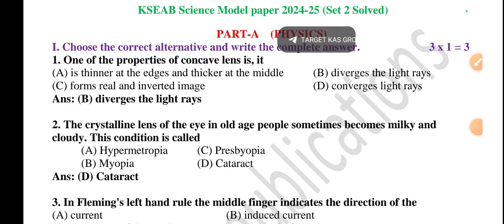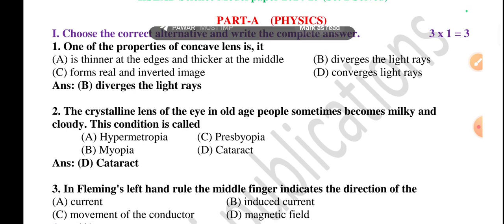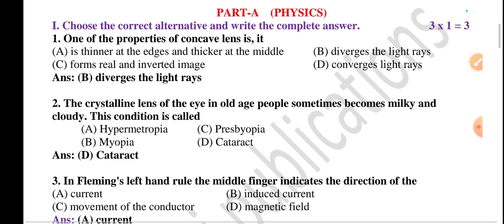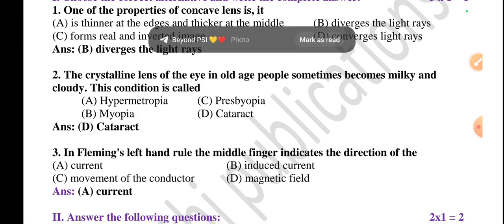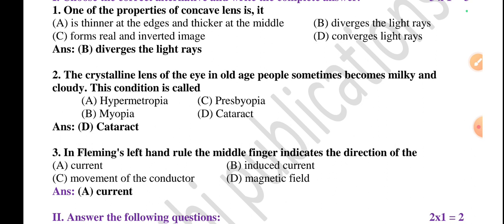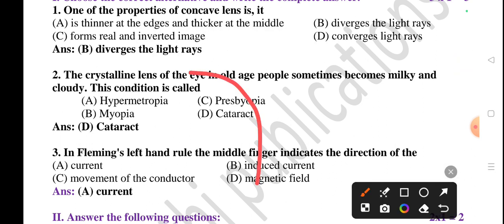Very good morning. Today we are going to discuss the 2024-25 model science question paper, Set 2. Let's start with Part A Physics. We have to discuss first, then choose the correct alternative or write the complete answer. They've given multiple choice questions, total three questions, each carrying one mark. First question: one of the properties of concave lens.